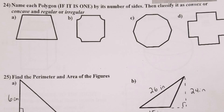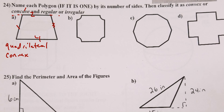Number 24: name each polygon by its number of sides and classify it as convex or concave and regular or irregular. For 24a, we have four sides — that makes it a quadrilateral. It is convex because it does not cave in, and it is irregular because the sides are not all the same length and the angles aren't all the same. B is not a polygon because of the curve.